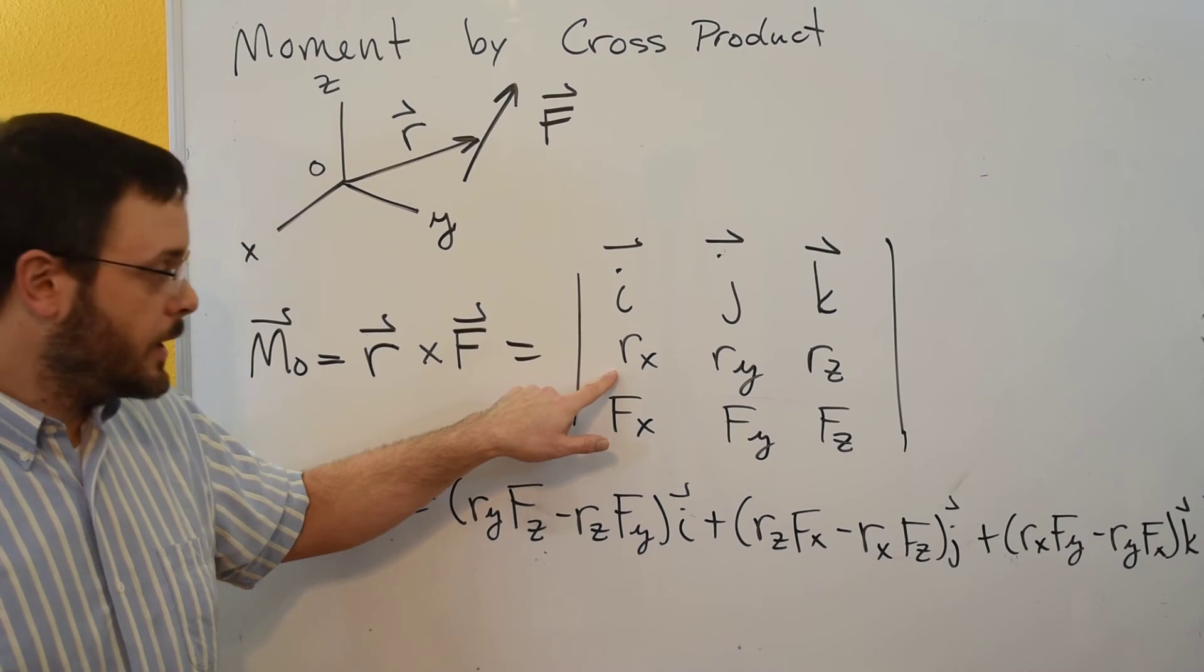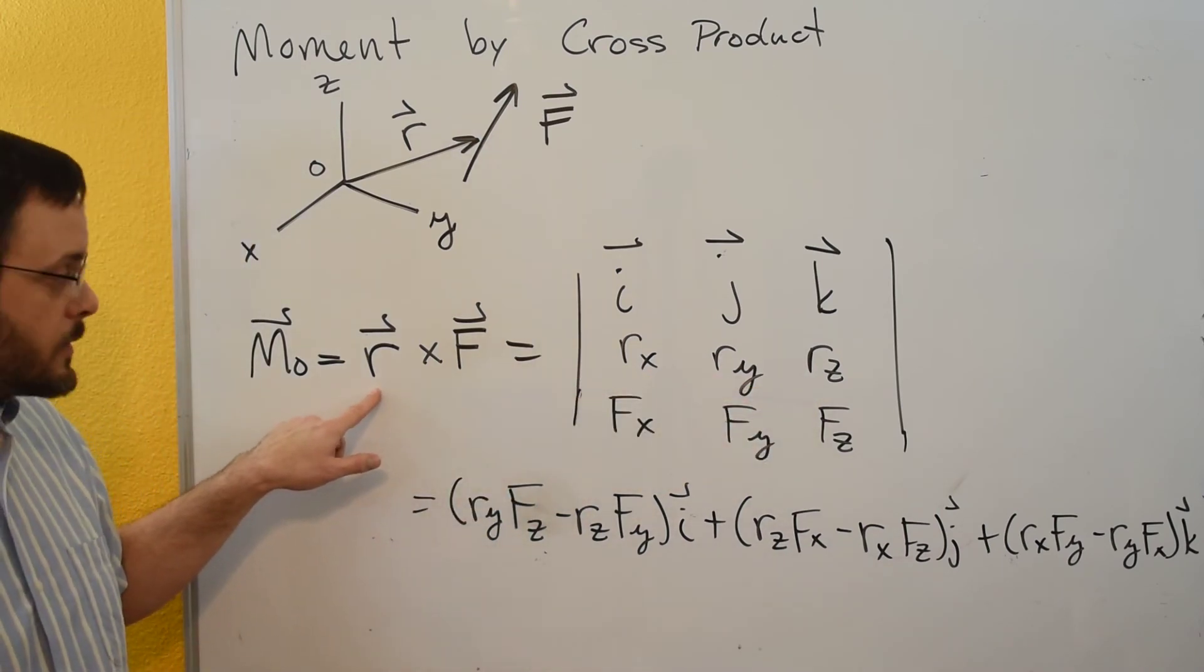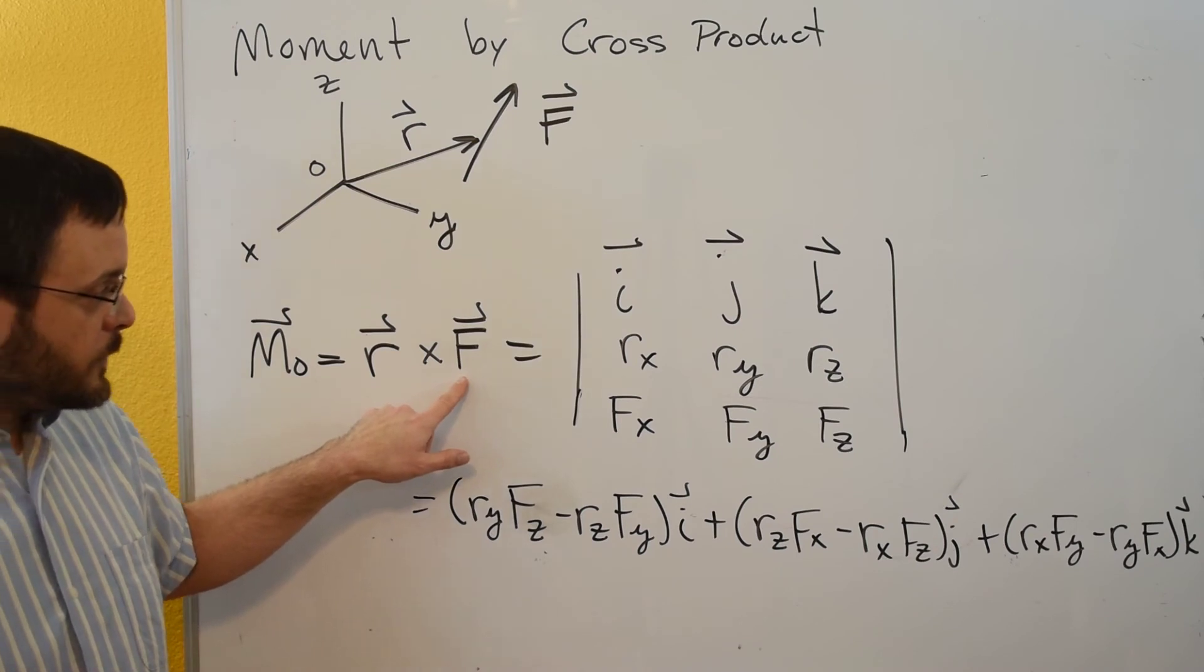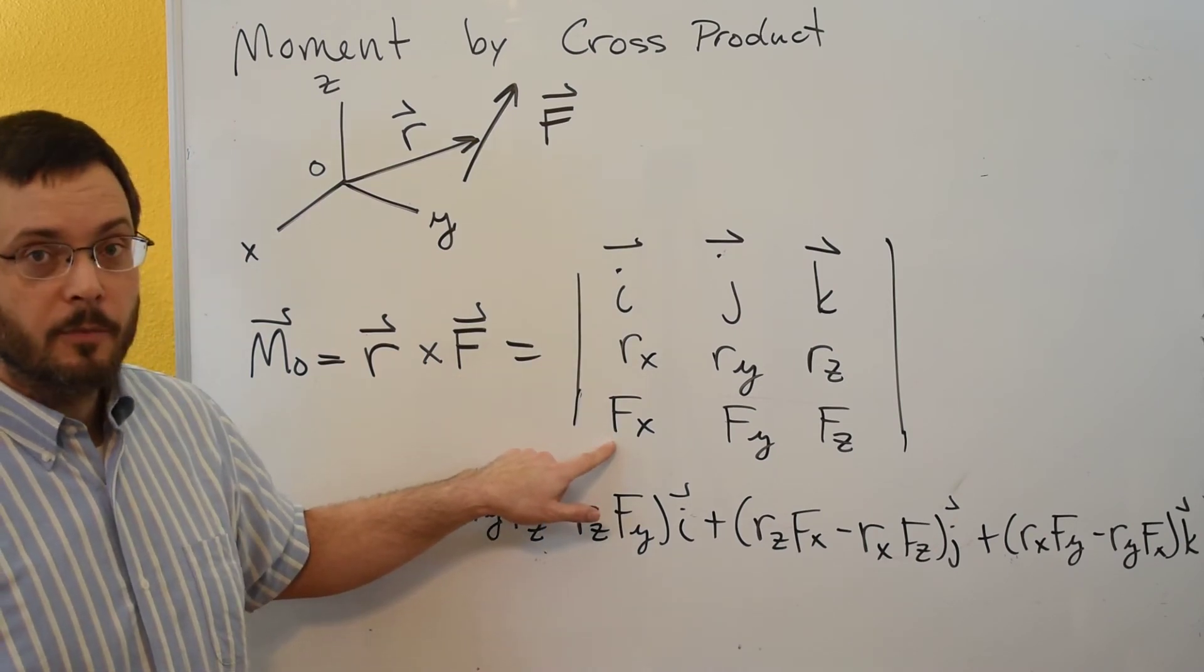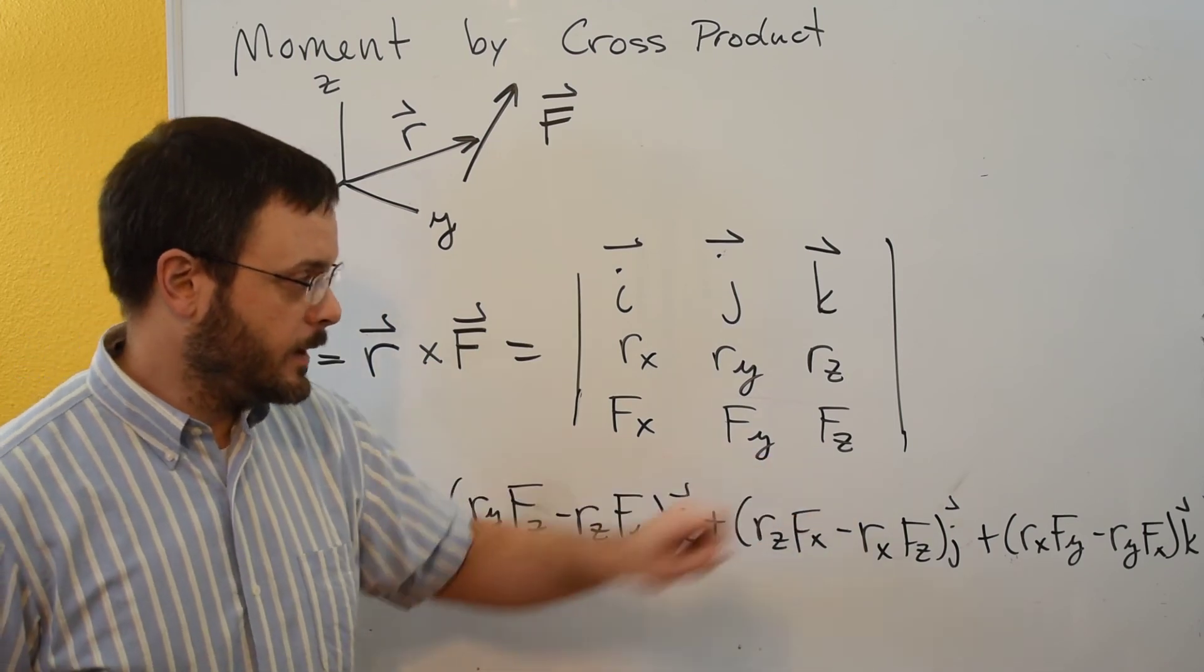The next row would be Rx, Ry, and Rz because R is the first vector, and then F is the second vector so it forms the bottom row: Fx, Fy, and Fz.